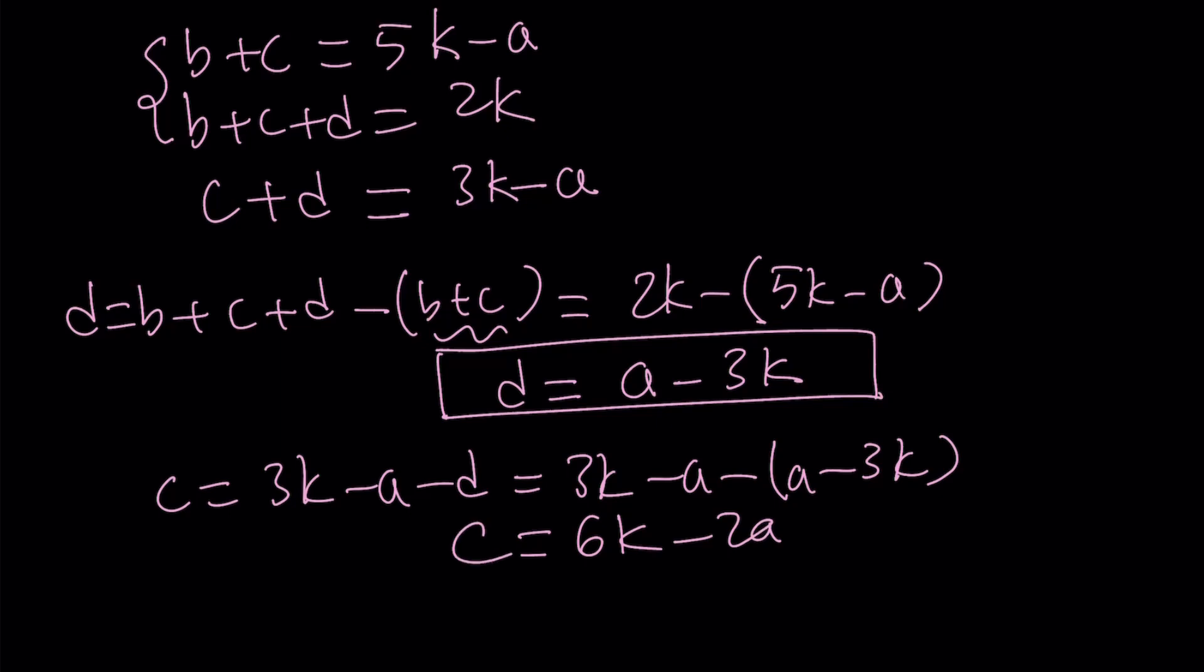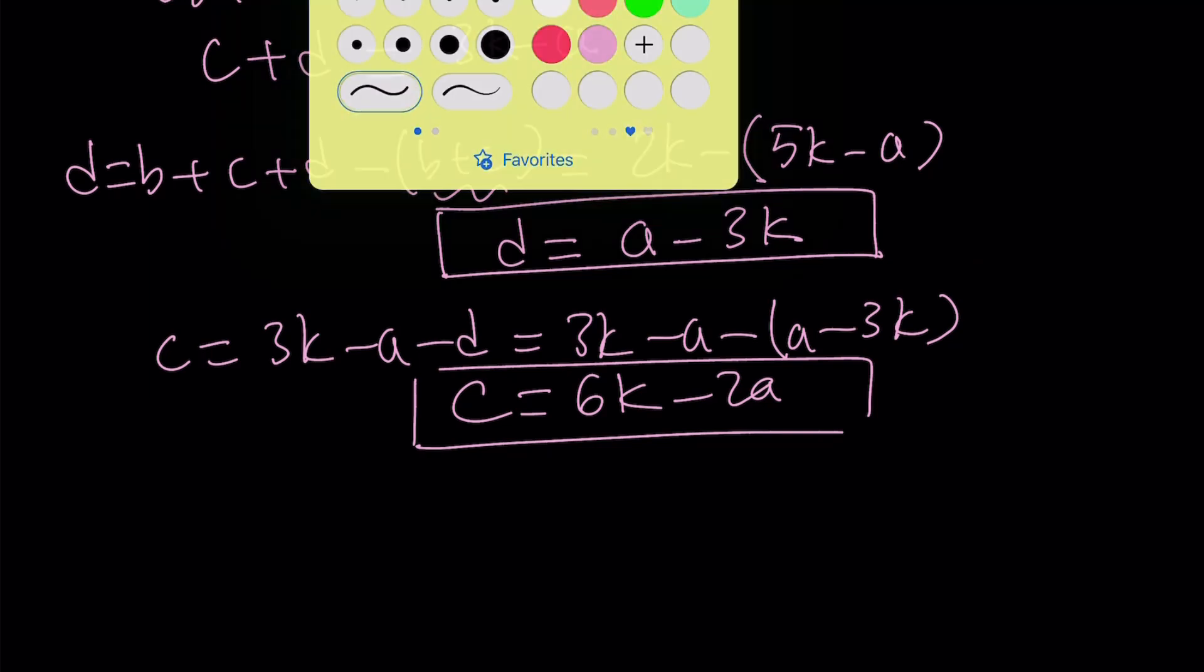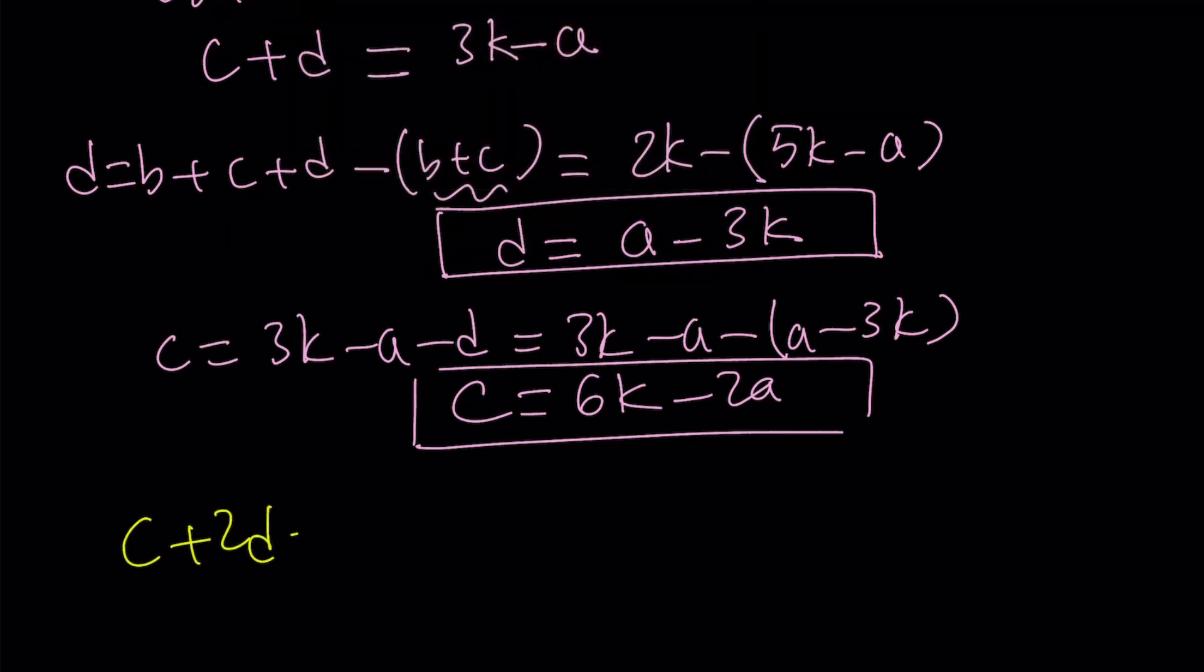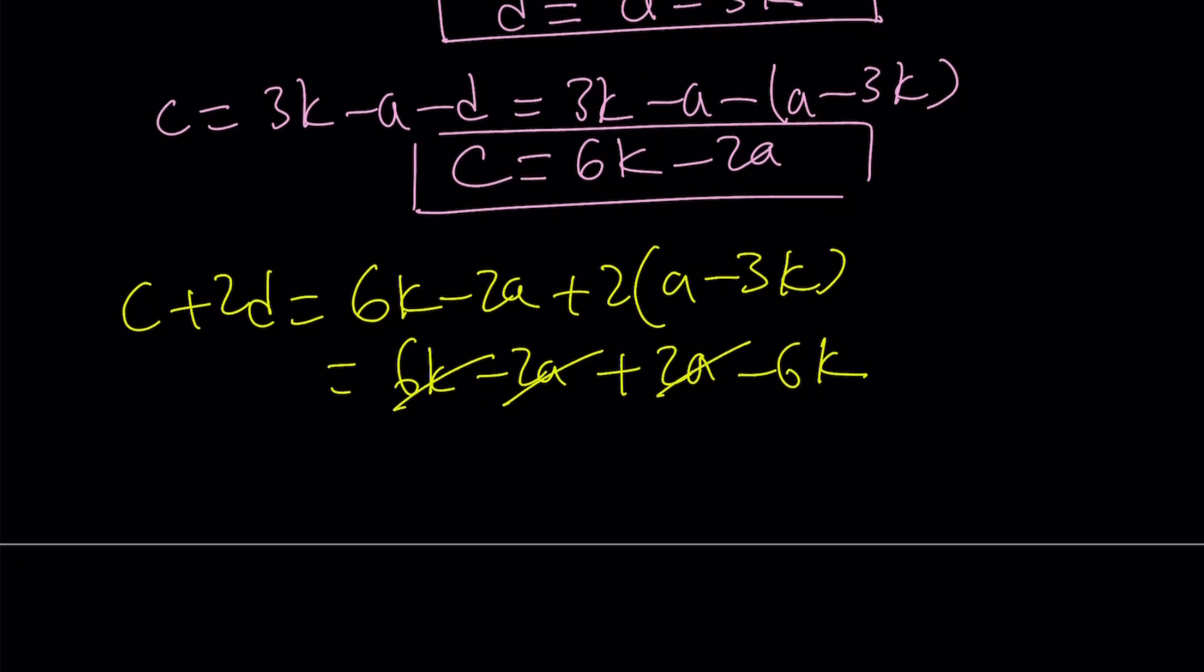That's going to be the value of c. Now I got the value of d, and I want to find c plus 2d. C plus 2d is going to equal c plus 2 times d, which is a minus 3k, and then it's going to equal 6k minus 2a plus 2a minus 6k. And wow, that's amazing. Pretend to be surprised, and you get a zero from here.